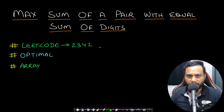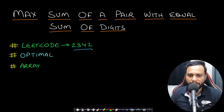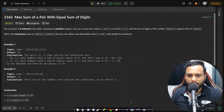Hello guys, welcome back to Tech Dose. In this video we will look at the Max Sum of a Pair with Equal Sum of Digits problem, which is LeetCode number 2342. Let's now look at the problem statement.